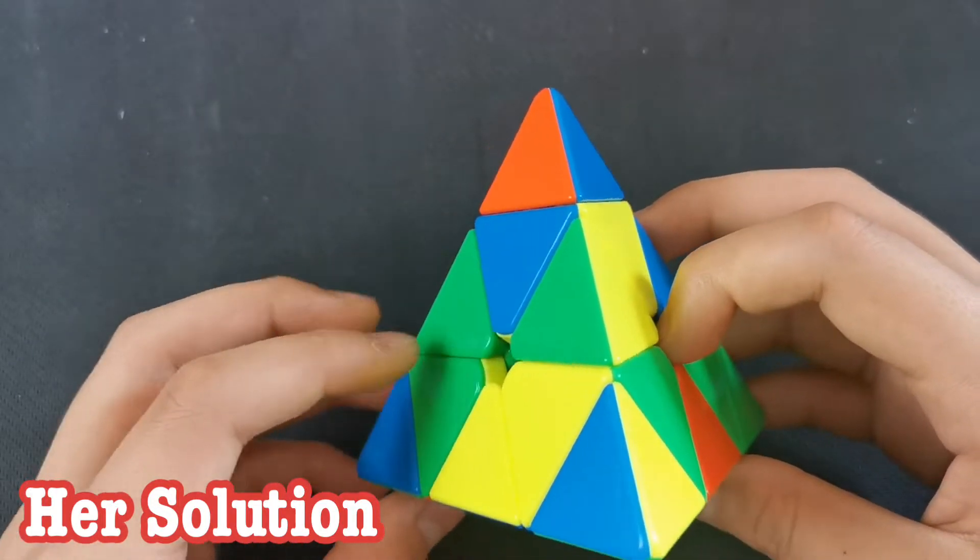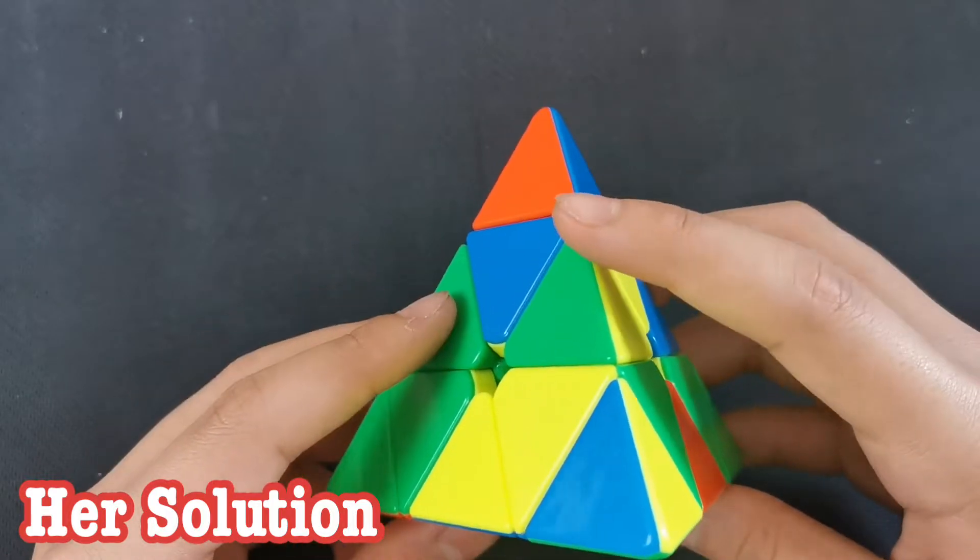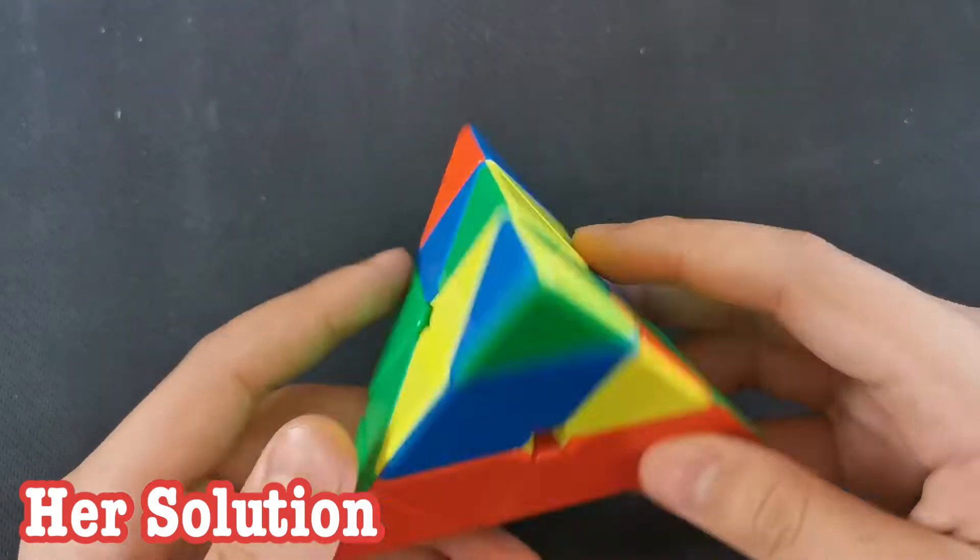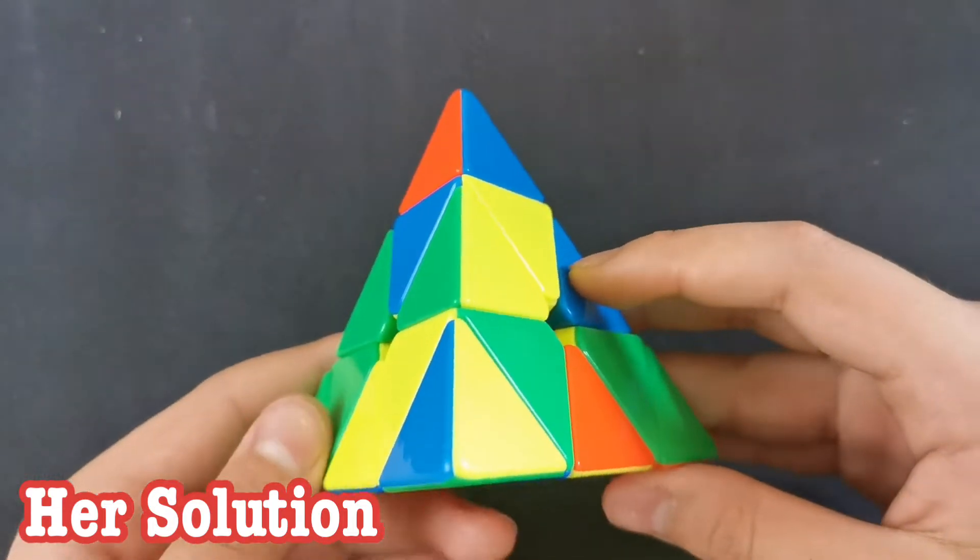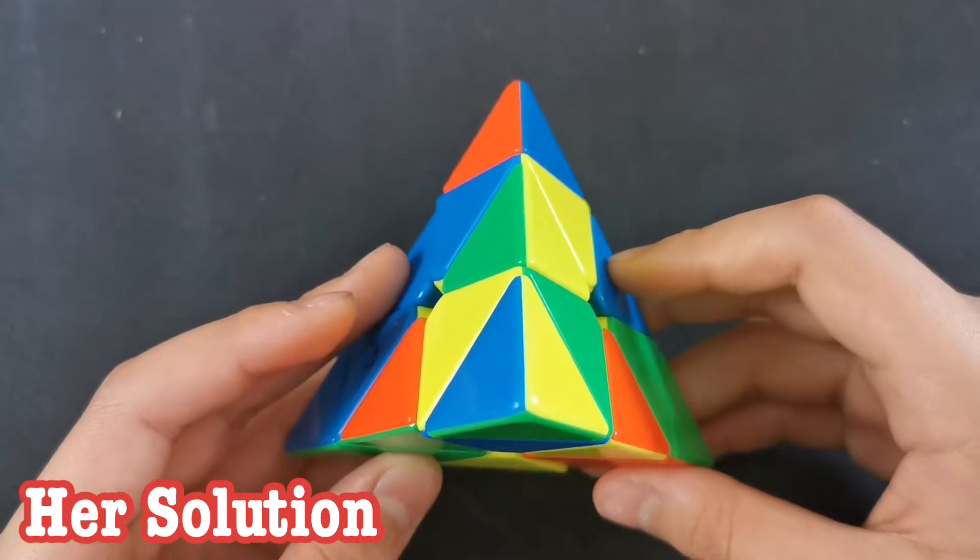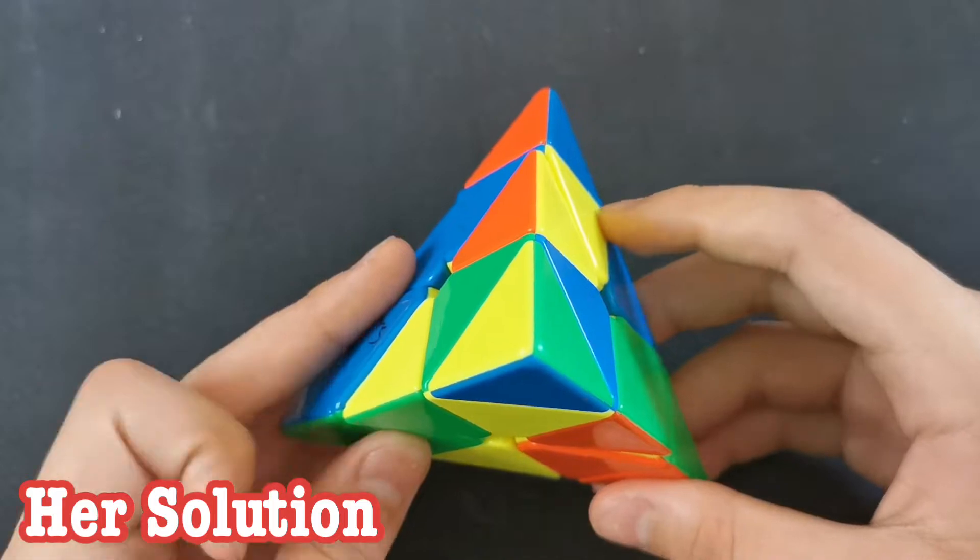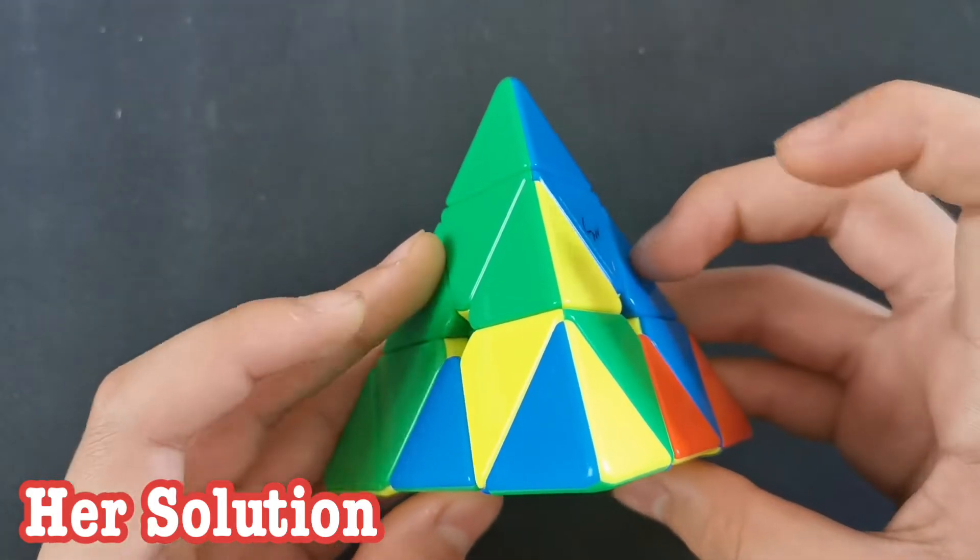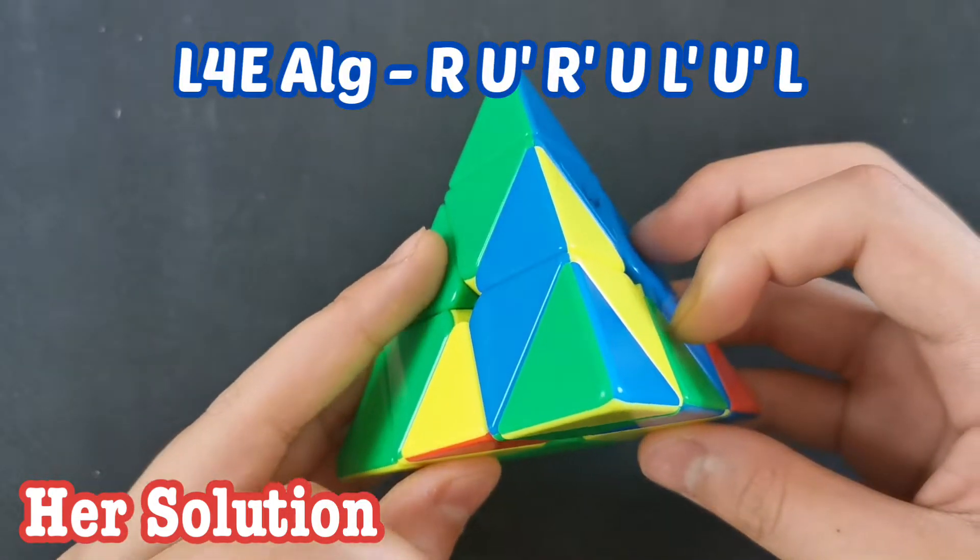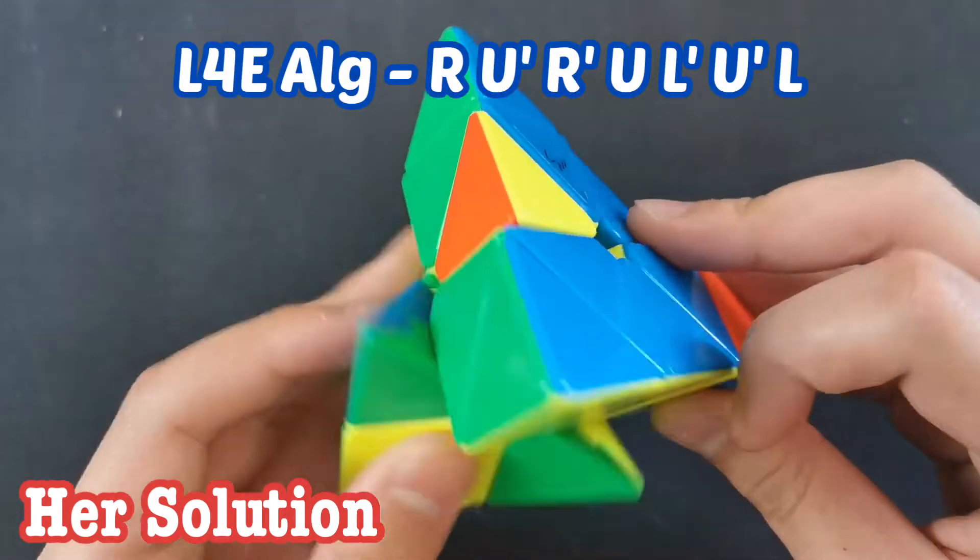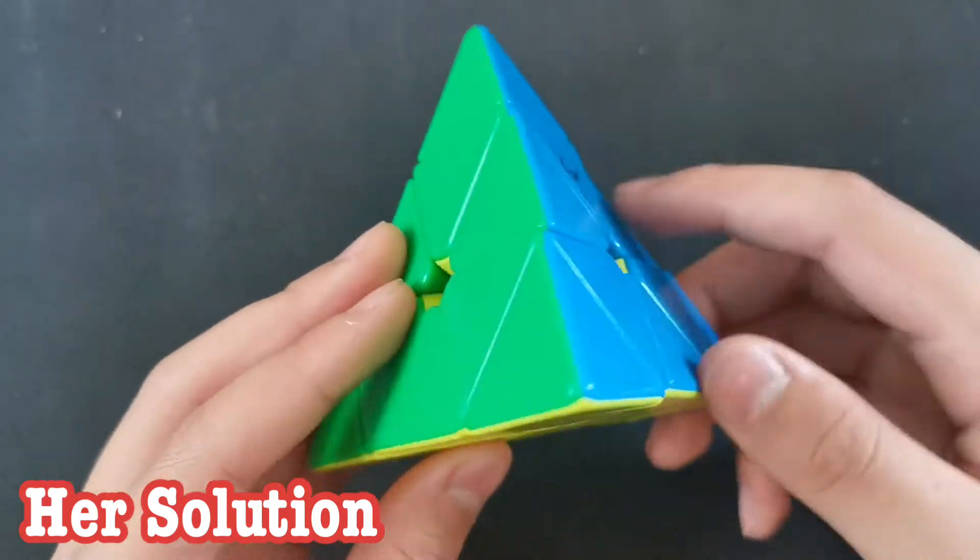So I think she went with the left tip, and then she put this center down to match it while putting this block in with L, and then she did U', R', rotated, and then she did this case, which is just insert, and then she did a tip, and then she did this case with the last tip.